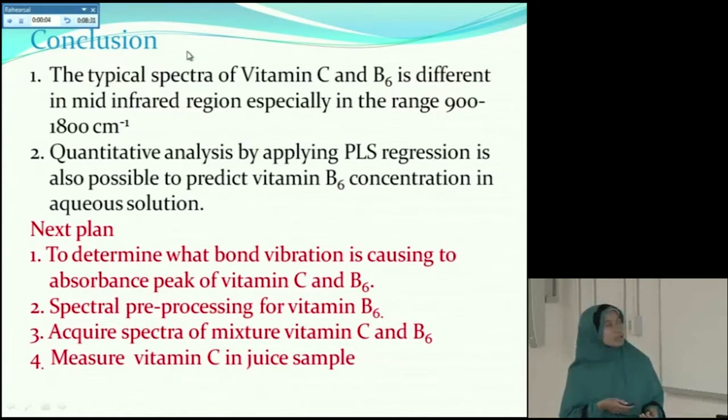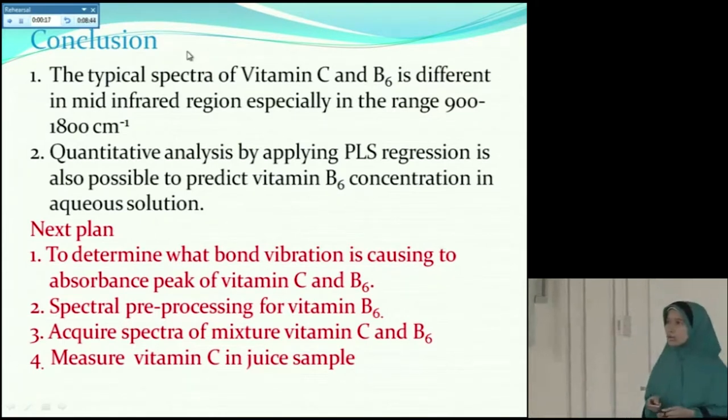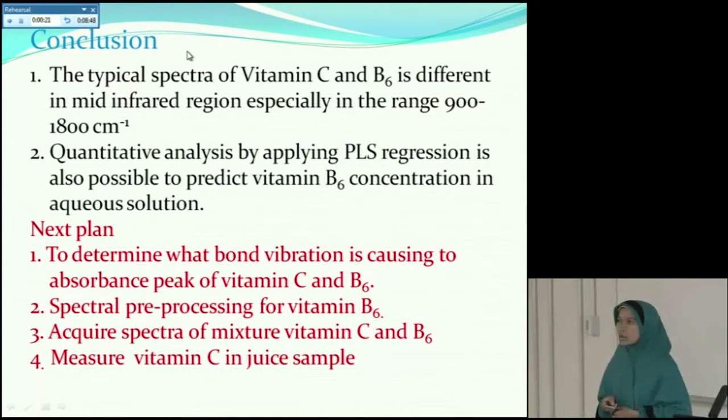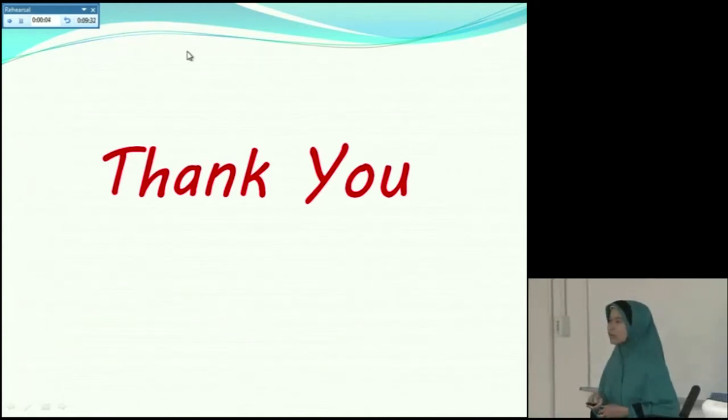In conclusion, the typical spectra of Vitamin C and B6 is different in mid-infrared region, especially in the range 900 to 1800 per centimeter. A quantitative analysis by applying PLS regression is also possible to predict Vitamin B6 concentration. I will apply spectral pre-processing for Vitamin B6, and then I will acquire spectra of mixture of Vitamin C and Vitamin B6. Finally, I want to measure Vitamin C in a real juice sample, for example orange juice, strawberry juice, and so on. That's all my presentation today. Thank you very much for listening.